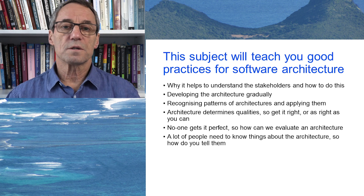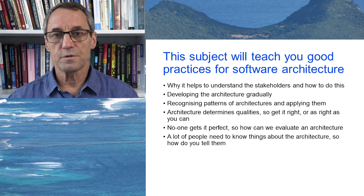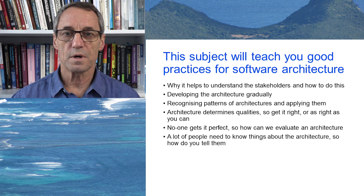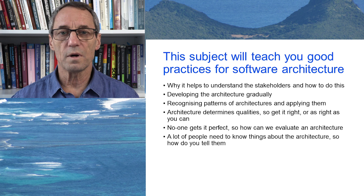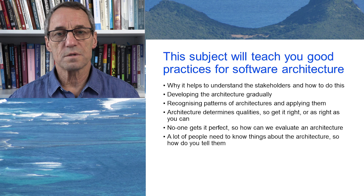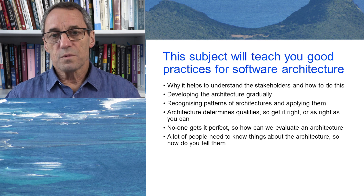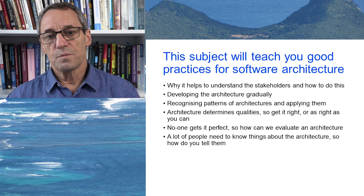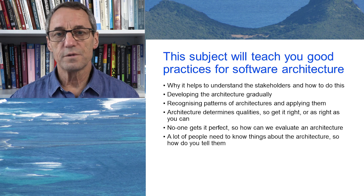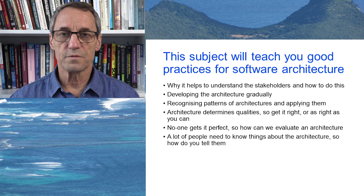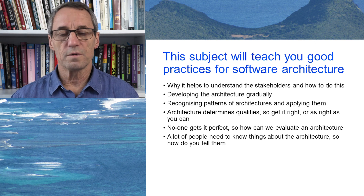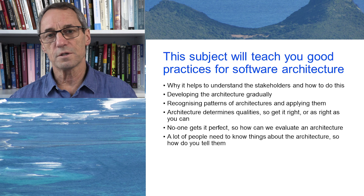An architecture determines the qualities of a system. A quality, for example, is how secure the system is, how reliable it is, how testable, or how usable. It's really hard to make a system secure if it was not designed to be secure — retrofitting qualities into a system is very difficult. The architecture is the place where that happens, and it's very difficult to change afterwards.